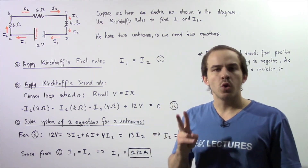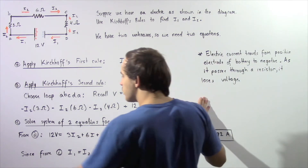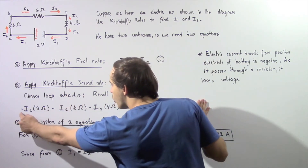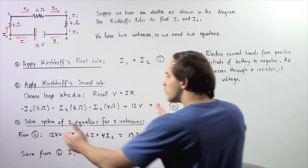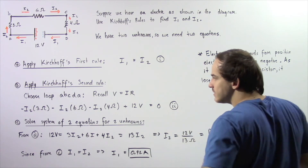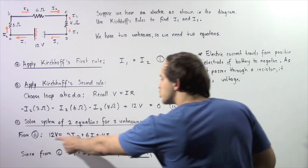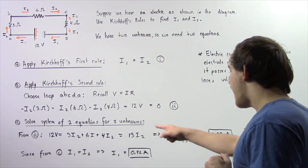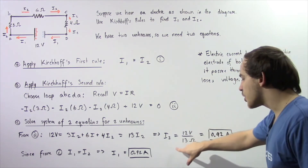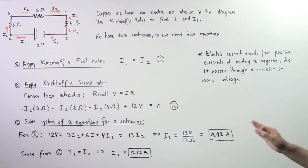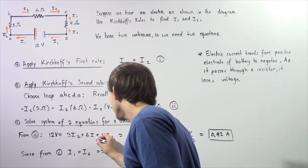We now have two equations and two unknowns. Starting with equation 2, we combine all terms and solve for I2. Moving terms to one side: 3I2 + 6I2 + 4I2 = 12 volts, giving us 13I2 = 12 volts. Therefore I2 = 12 volts divided by 13 Ohms, which gives approximately 0.92 amps.